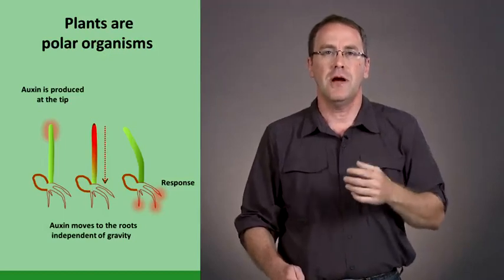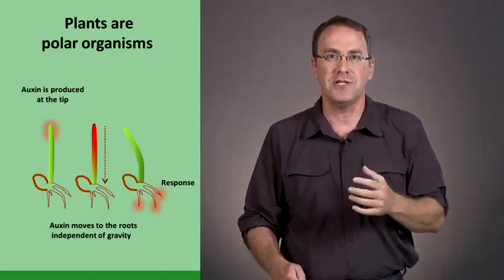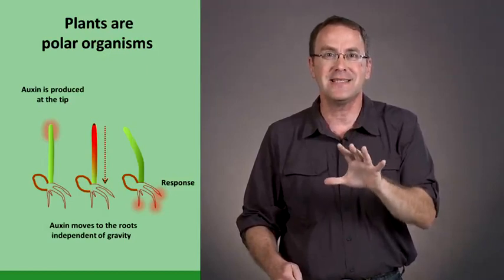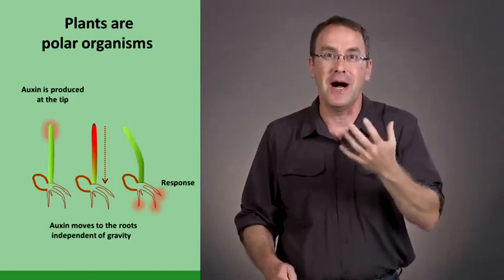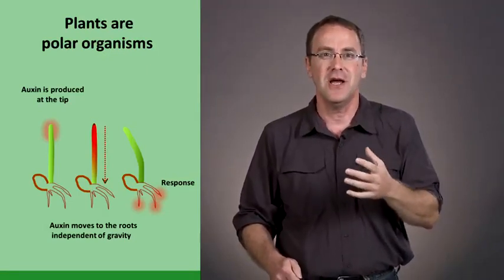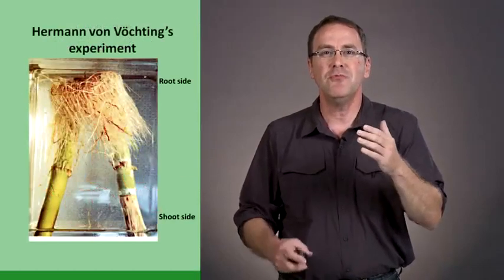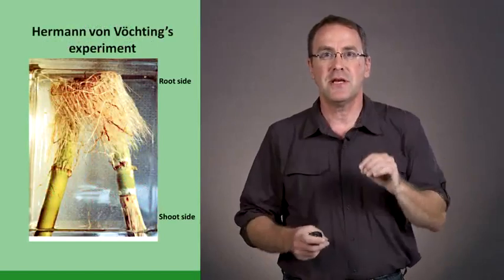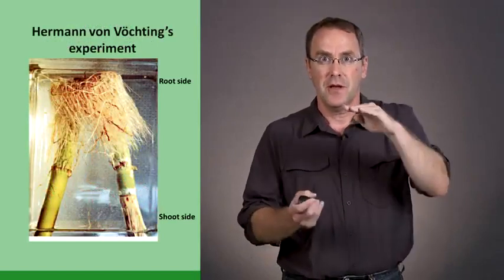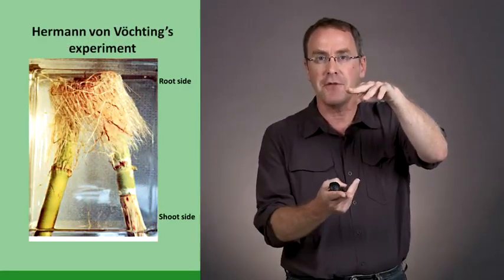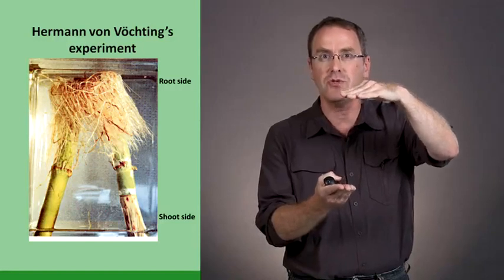This polar basis of plant biology was discovered in the mid-19th century by another plant physiologist, Hermann von Vöchting. He reported that if he would take stems of trees, cut off the top, cut off the bottom so he'd just have the stem—no longer roots, no longer leaves—